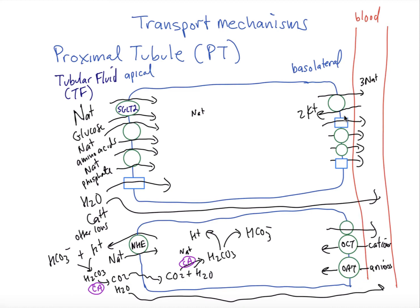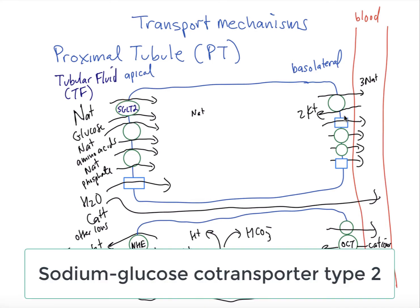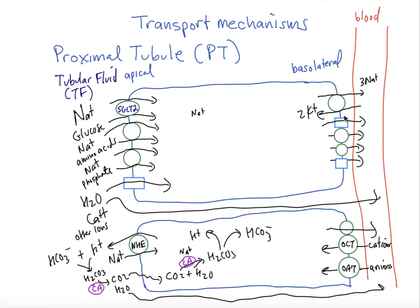And we can see that we have several transporter mechanisms listed here and we'll start first with the one that's labeled SGLT2, sodium glucose co-transporter type 2. This is the predominant one that's responsible for glucose reabsorption in the proximal tubule and you can see that it's a co-transporter that requires the sodium gradient that's set up by the sodium potassium ATPase pump.